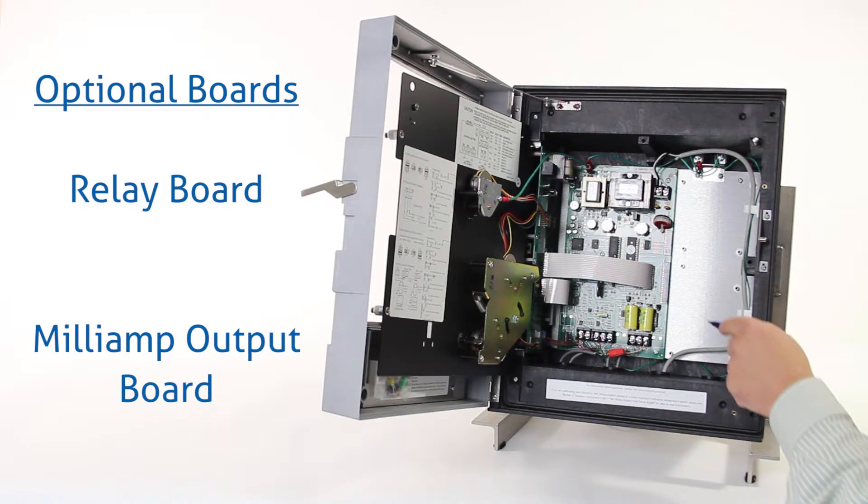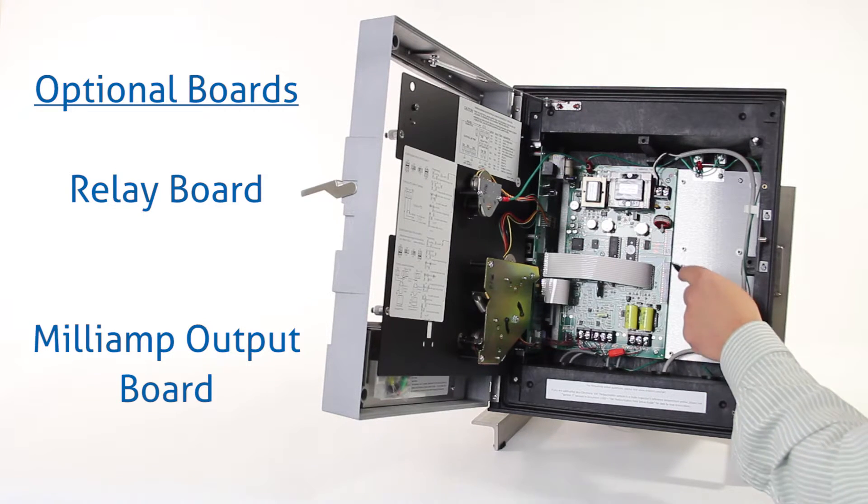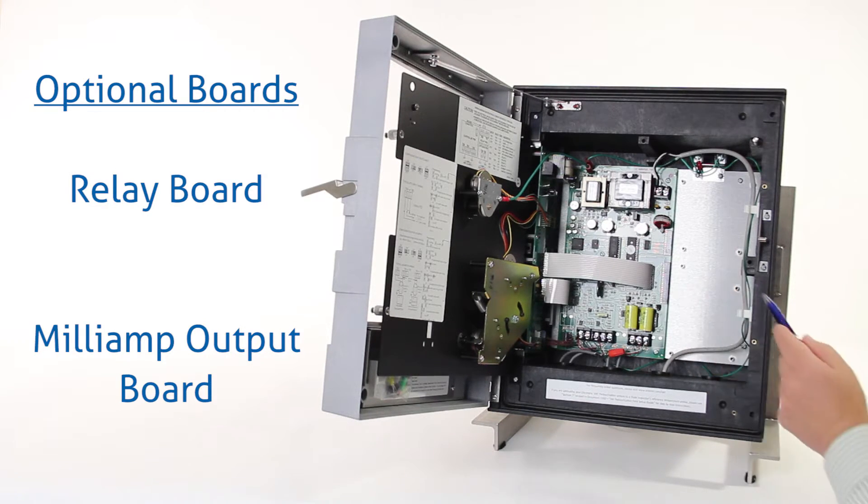Down on the bottom right is where a milliamp output board could be installed. It would connect to this connector on the bottom right-hand side of the motherboard, so you can get it with or without the milliamp outputs as well.